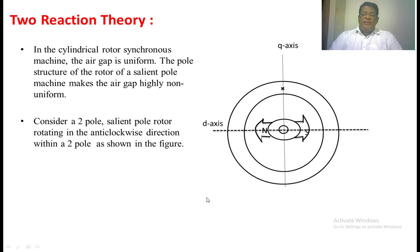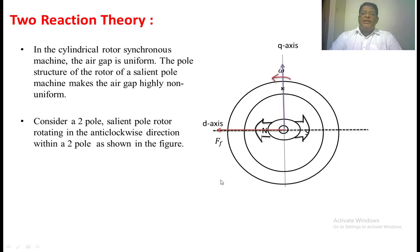Whenever we energize the field winding, the MMF will be created from the field, aligned with the main field axis. This is the main field axis, denoted as the d-axis. When we give mechanical input to the rotor, there is a rate of change of flux linkage with the stator conductor, and a voltage will be induced in the stator — that is the excitation voltage. The angle between the main MMF and the excitation voltage is 90 degrees. All the phasors are rotating in the anti-clockwise direction, and the length EF represents the excitation voltage.